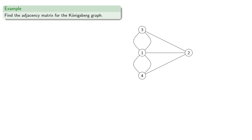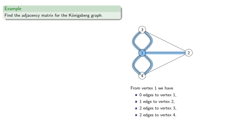So if we go back to the graph of the Königsberg bridge problem, we see that from vertex 1 we have zero edges to vertex 1, one edge to vertex 2, two edges to vertex 3, and two edges to vertex 4. So the entries in the first row are going to be 0, 1, 2, 2.